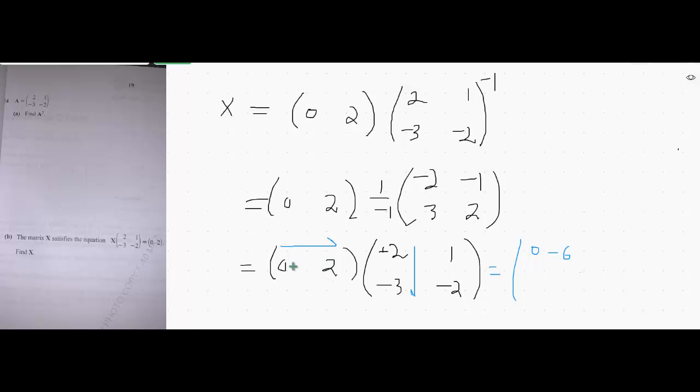Now I will multiply this row with this column: 0 into 1 is 0 and 2 into minus 2 is minus 4.